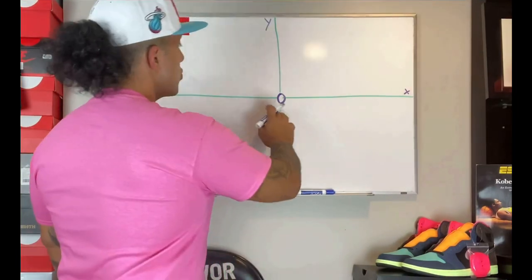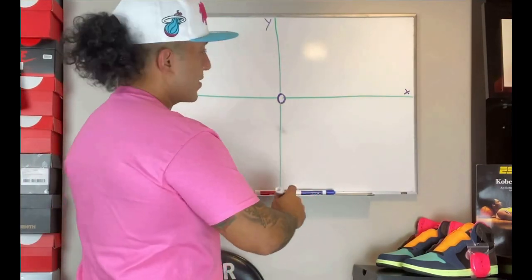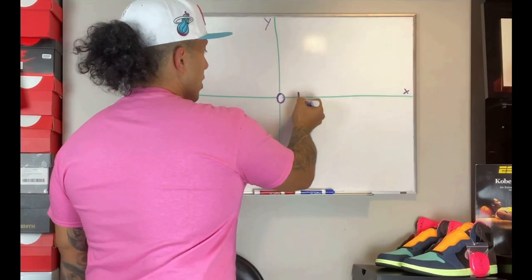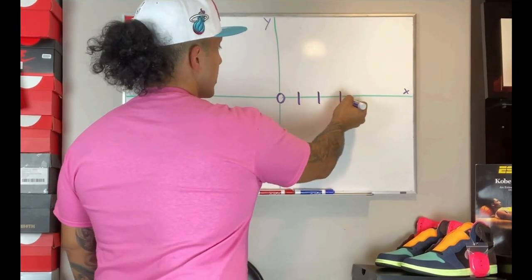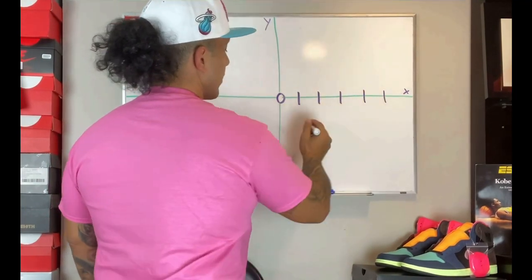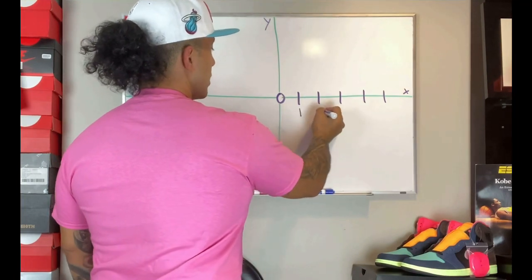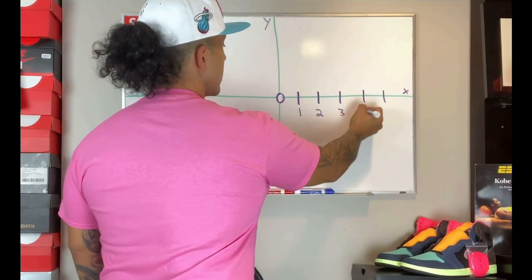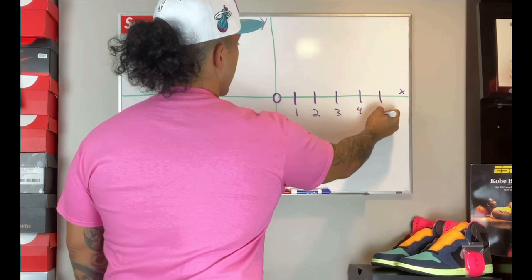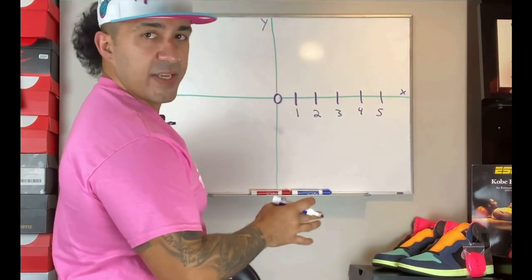Now to start, we're going to number our axes. We have 1, 2, 3, 4, 5, and then underneath I'm gonna write the numbers 1, 2, 3, 4, and 5. I'm just gonna go with basic numbers, 1